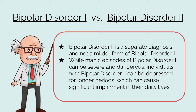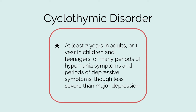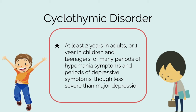In Cyclothymic disorder, adults must have at least two years — and children and teenagers at least one year — of many periods of hypomania symptoms and periods of depressive symptoms, though less severe than major depression.